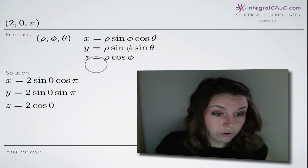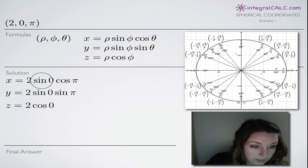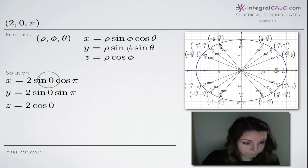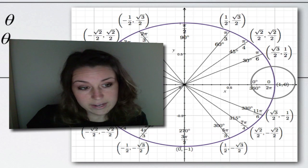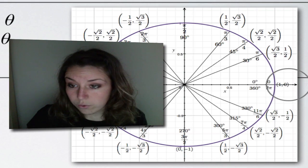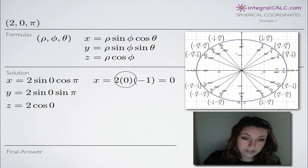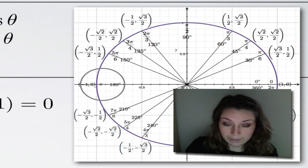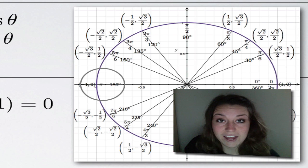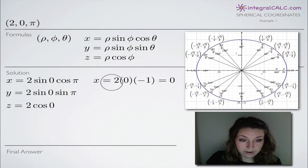Now all we have to do is use the unit circle to evaluate. We will have to evaluate at the angle 0 for sine. We go to our unit circle and look for the angle 0, which is here along the x-axis. Since we're looking for sine at that angle, we're looking for the y-coordinate, which is 0. So our equation for x is going to be 2 times 0, and then for cosine of pi, we go to our unit circle to the point where the angle equals pi. Because we're looking for cosine of that angle, we're looking for the x-coordinate there, which is negative 1. So x equals 2 times 0 times negative 1, which gives us 0.